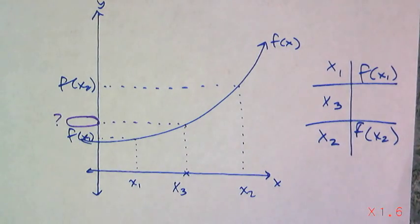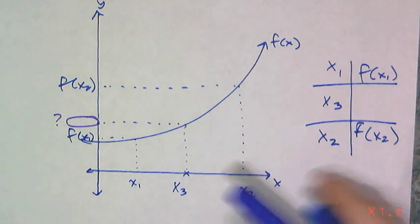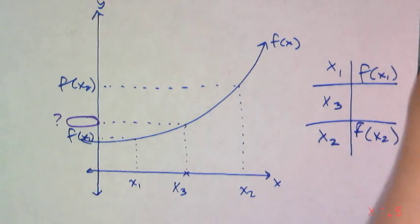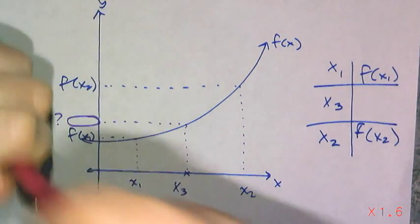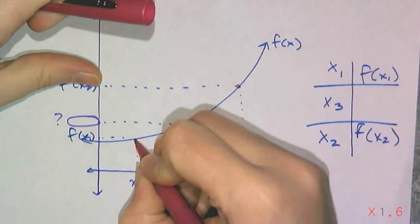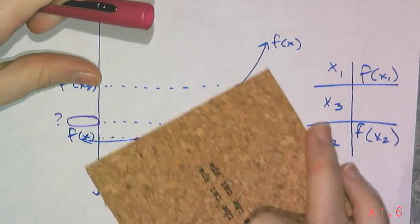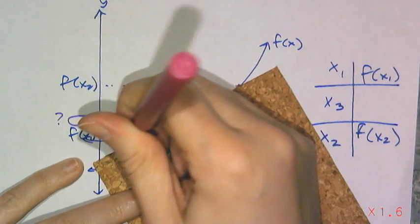You don't know what the function is. All you have are data points on the function. You don't have an equation for it or anything like that. So what you do is you treat these two points as two points on a line, and you connect those two.